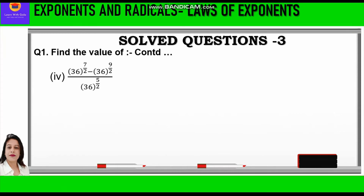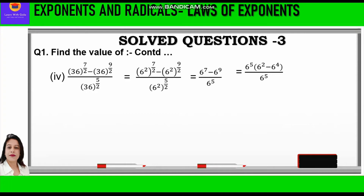Let us take up question number 4: 36 raised to power 7 by 2 minus 36 raised to power 9 by 2, upon 36 raised to power 5 by 2. Now 36 is 6 square, so we write 6 square in all brackets: 6 square raised to power 7 by 2 minus 6 square raised to power 9 by 2, upon 6 square raised to power 5 by 2. The 2s cancel and we get 6 raised to power 7 minus 6 raised to power 9, upon 6 raised to power 5. We take 6 raised to power 5 common, leaving 6 raised to power 2 minus 6 raised to power 4 in the bracket, because 5 plus 2 is 7 and 5 plus 4 is 9.